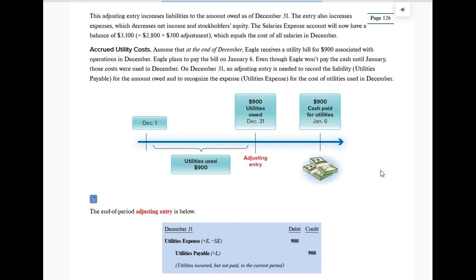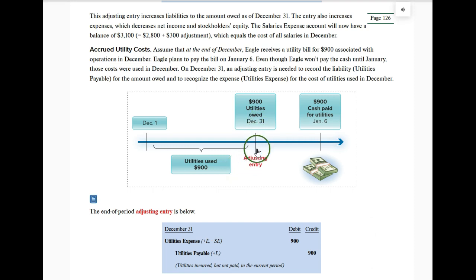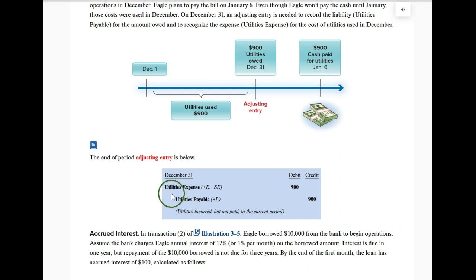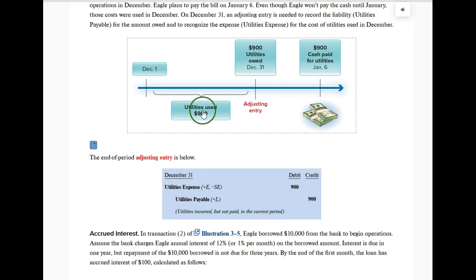Another accrued expense example: utility cost. On December 31st we receive our utility bill — $900 for the month. We just got the bill at end of year; we've used these utilities and typically have about a week before we have to pay. But at end of year, let's record exactly where things stand. The adjusting entry: debit utilities expense $900, credit utilities payable $900. We record the expense and the payable because we've used the utilities this month, it's an expense for this month, and we owe the money at end of year. We'll pay on January 6th, but as of December 31st we still owe the money.